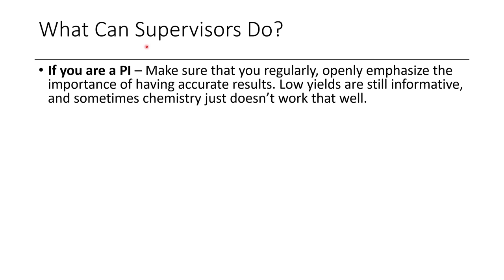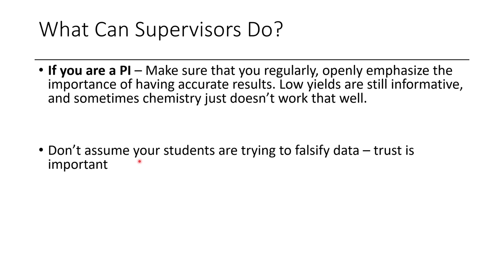What can supervisors do? If you're a PI, regularly and openly emphasize the importance of having accurate results. You don't want your students embellishing results to make you happy — you want them to tell you the truth. If they get low yields, don't necessarily punish them, because this can still be informative and direct you toward higher-yielding chemistry. Sometimes chemistry just doesn't work that well, and knowing that lets us look for better approaches.